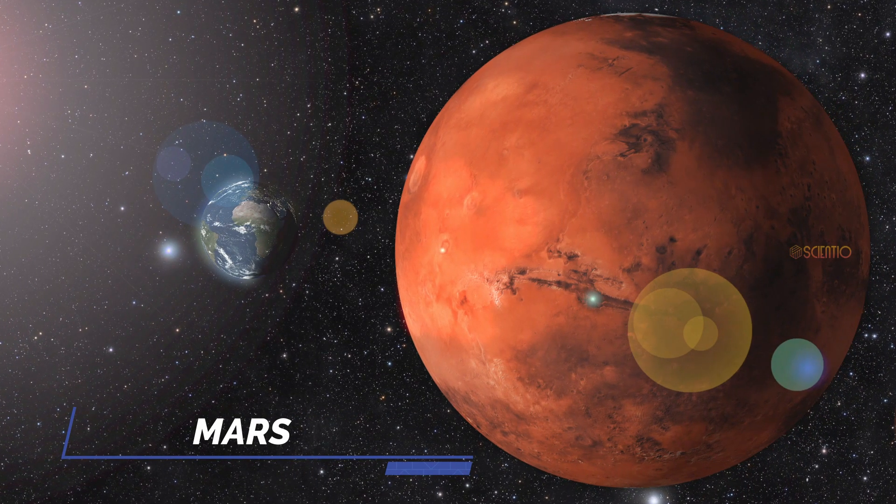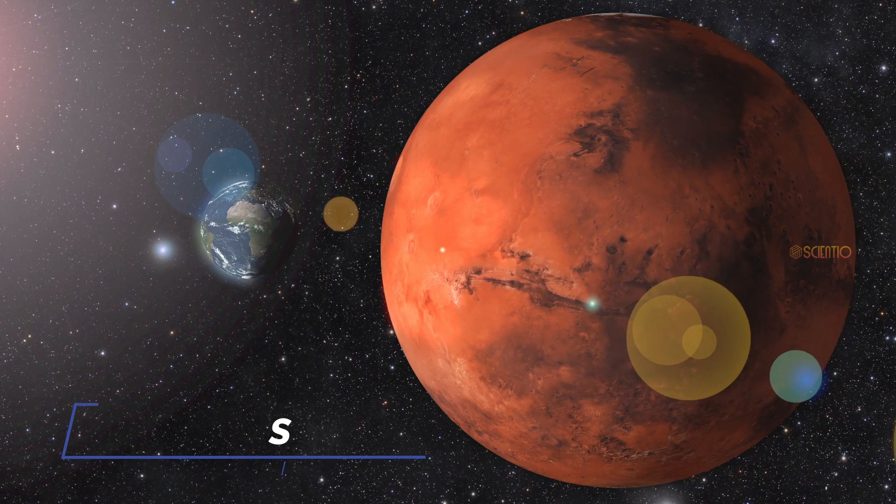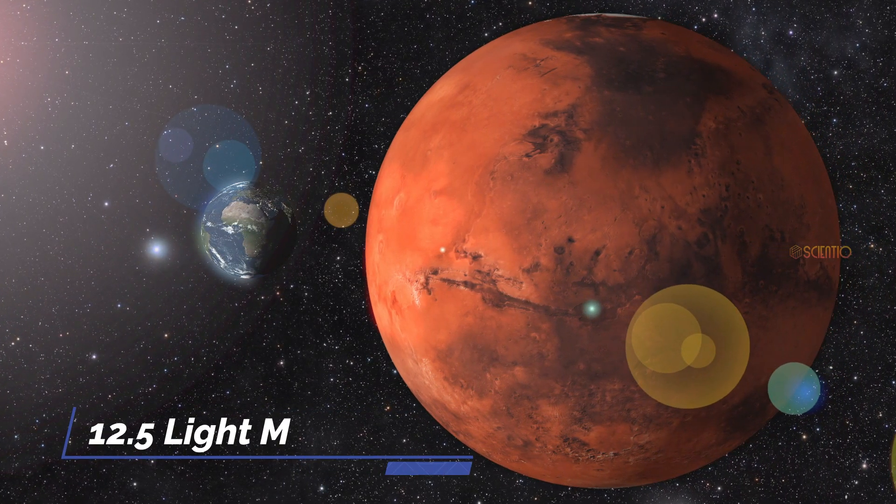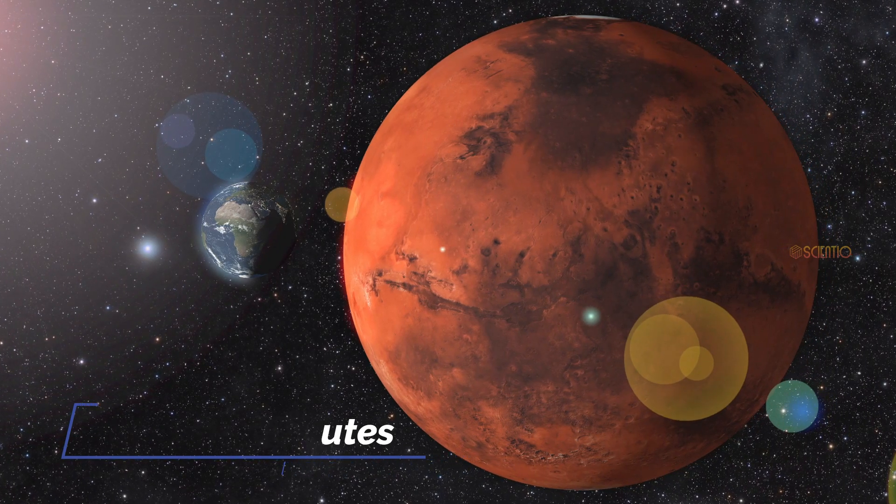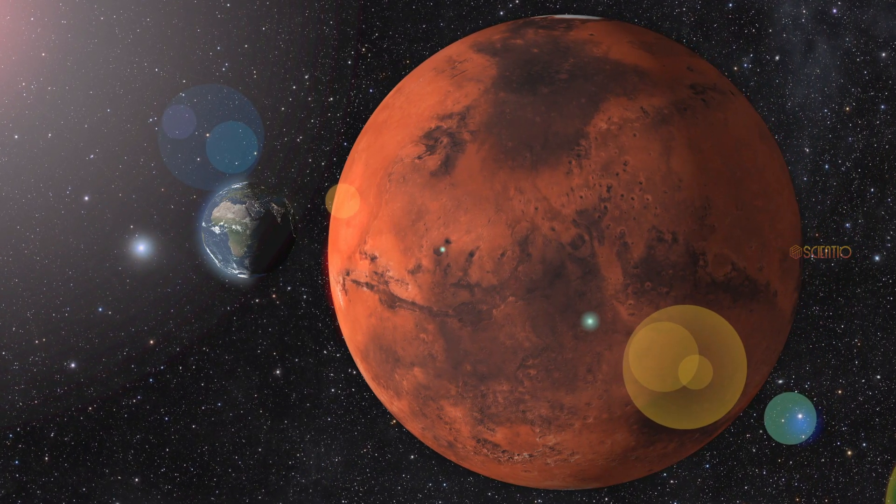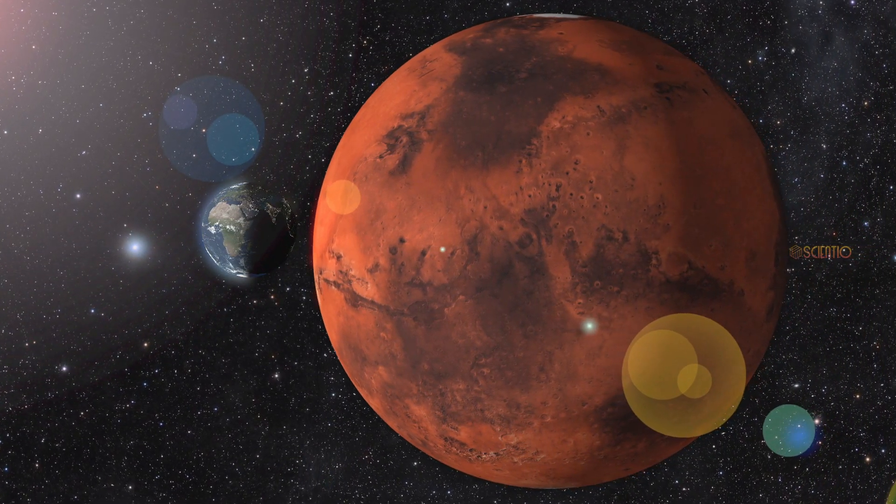Mars. The fourth planet from the sun, Mars, is located approximately 12.5 light minutes from the sun. We'll traverse its desolate terrain and witness the stunning vistas of the red planet.